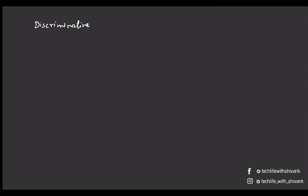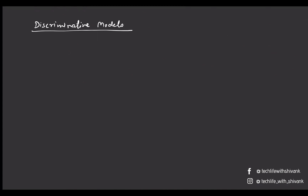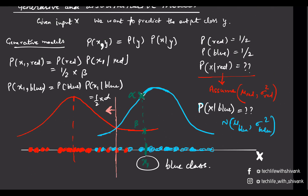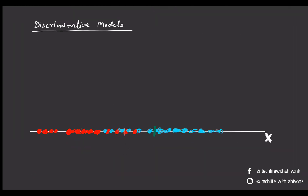On the contrary, a discriminative model says that we do not care about the underlying distribution. It does not care about P(x | y). It simply wants to find a good enough threshold such that the predicted answer is accurate, and it directly models P(y | x).